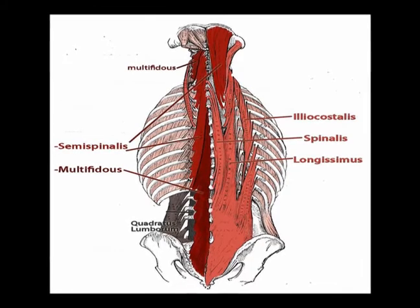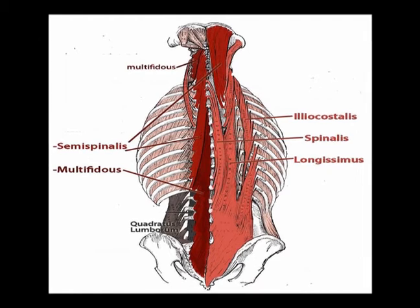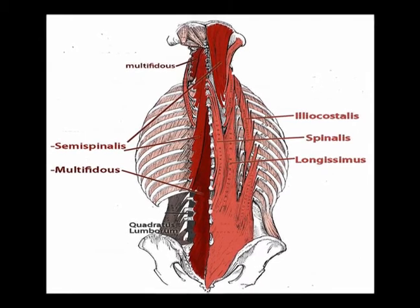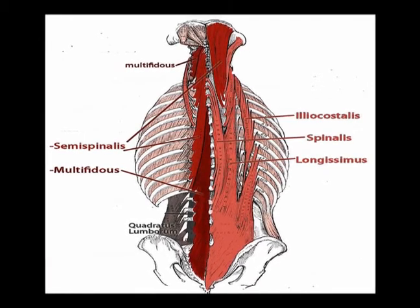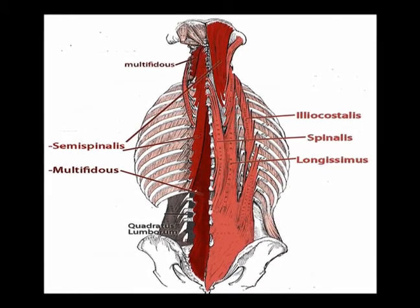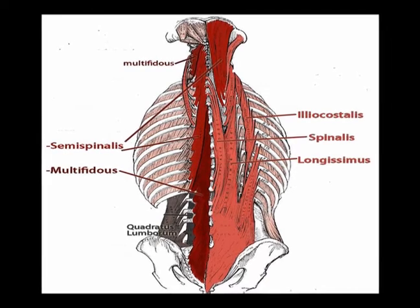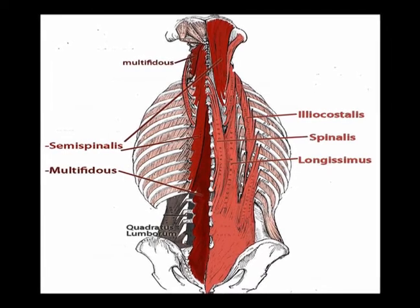In the upper lumbar spine, it divides into the three muscles. From medial to lateral: the spinalis, the longissimus, and the iliocostalis.